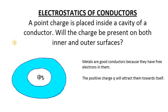Hello students, let us discuss this question of a metal conductor having a charge placed inside the cavity. A point charge is placed inside a cavity of a conductor — will the charge be present on both the inner and outer surface? That means if any charge is placed inside the cavity, what will be the charge on the inner surface and what will be the charge on the outer surface? Let us see.